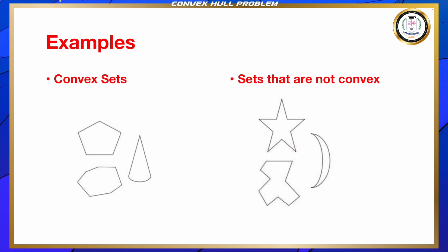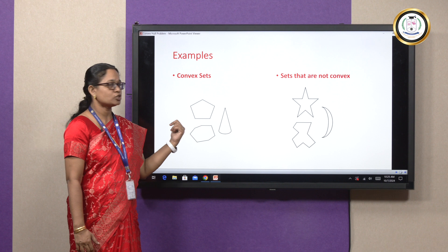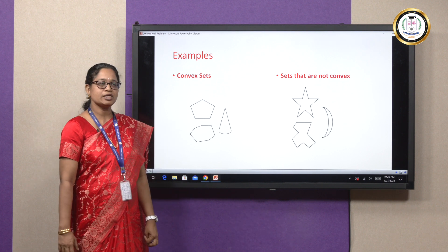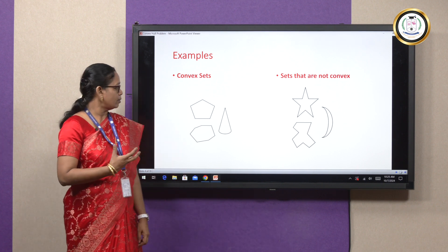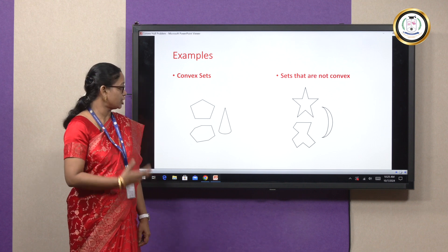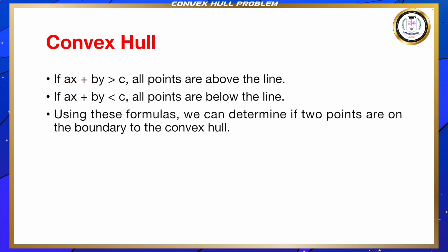Here are some examples which are convex sets and there are sets that are not convex. Looking at the figure of convex sets, you can observe the shape — the outermost points are connected. But in the sets that are not convex, this is not the case. That is a very important point.